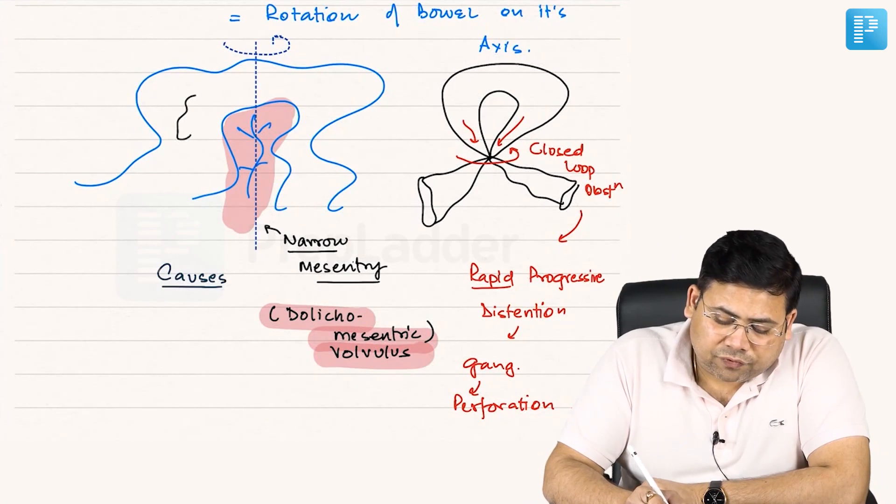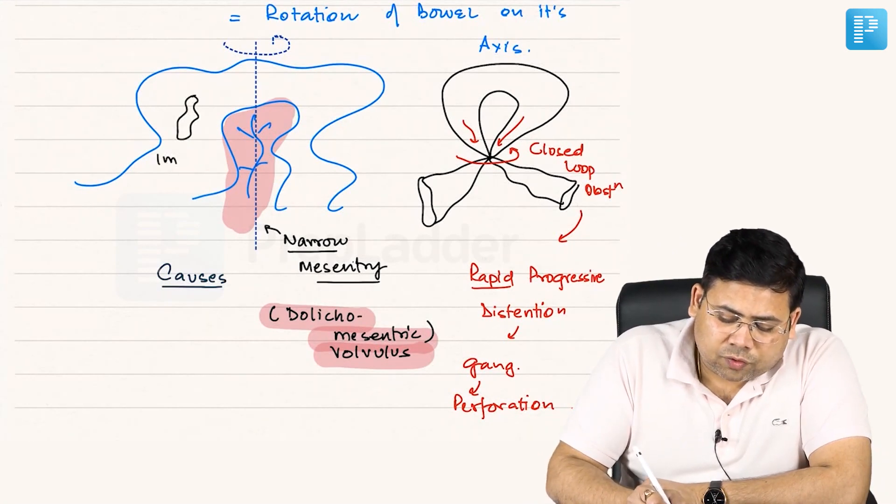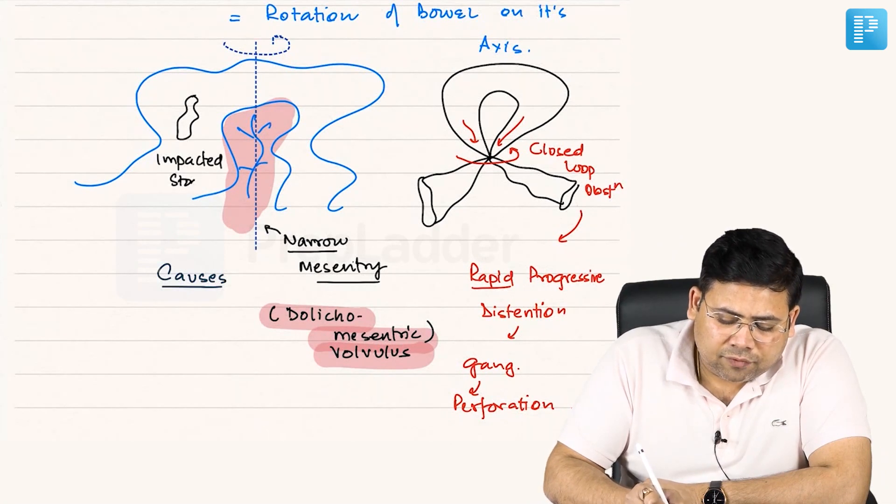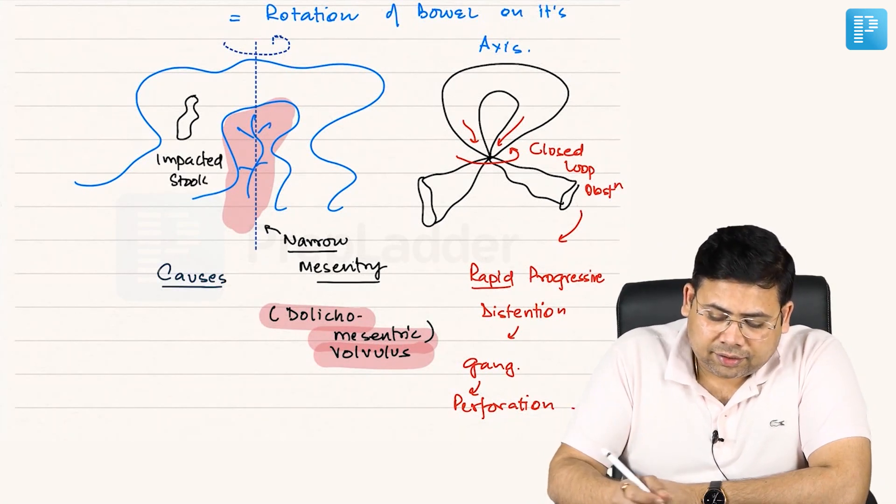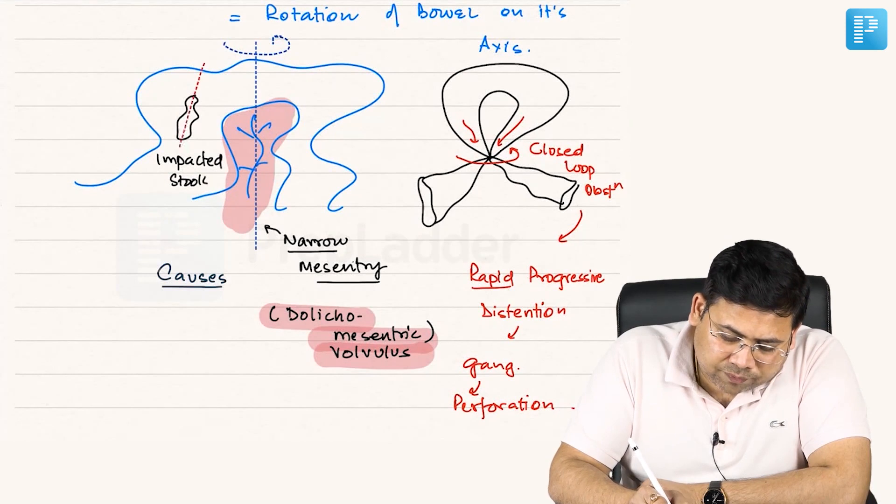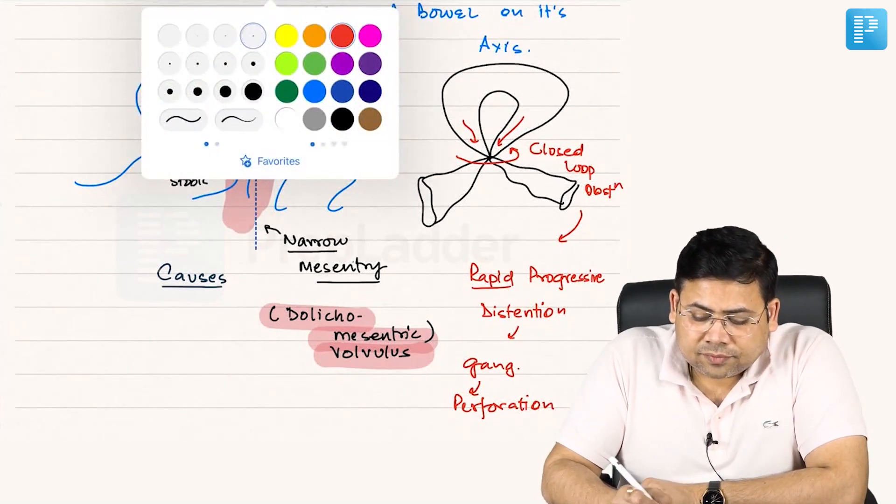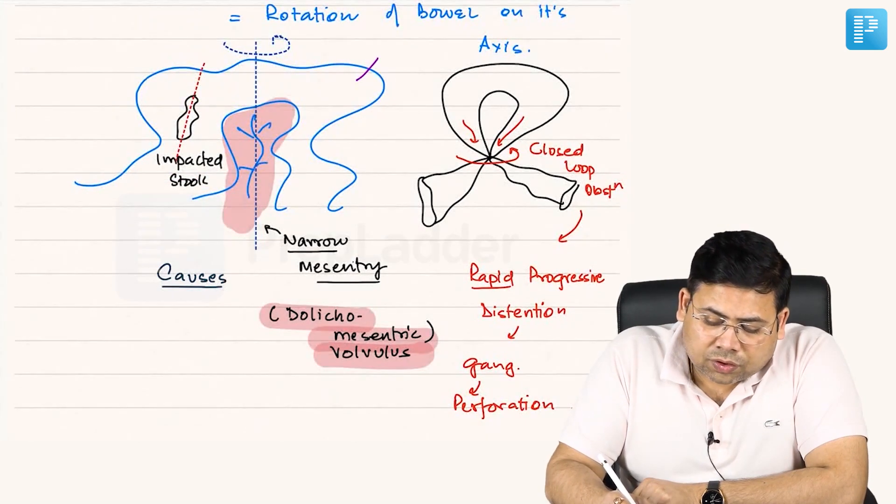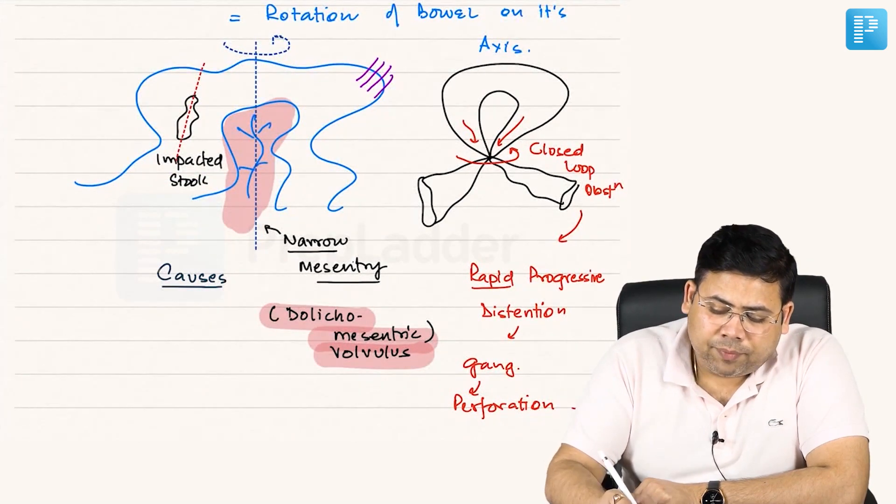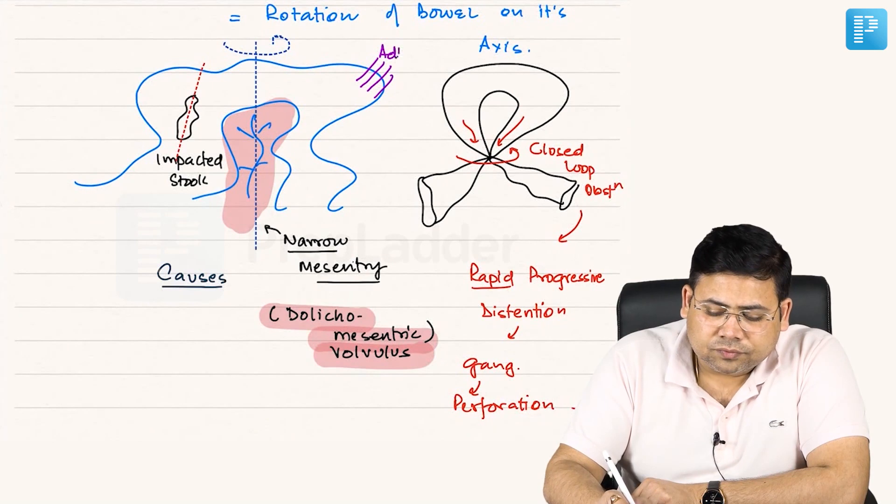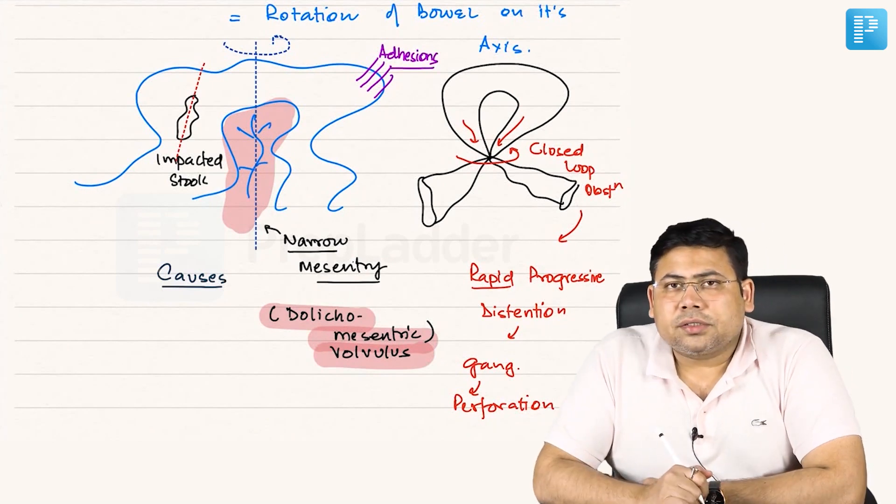Then it could be because of impacted stool. This impacted stool will be acting like an axis, so over this also the rotation can happen. Another thing is it can occur because of any band or you can say adhesions.